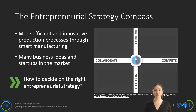Secondly, entrepreneurs need to choose when to compete. They can either choose to invest in control — for example by means of patents or some unique product or business architecture that is hard to imitate — to postpone direct competition into the future. Alternatively, they can choose to invest in execution, entering competition right away and staying ahead through constant, fast-paced improvement of the value they create for customers.